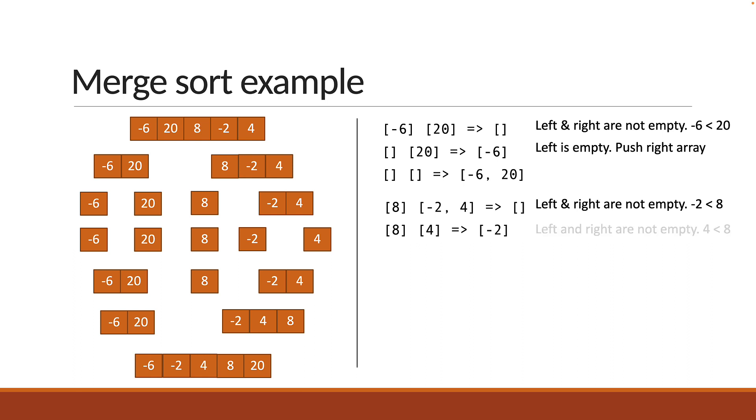Left and right arrays are still not empty. So we compare the first element in each array one more time. 4 is less than 8. So push 4 onto the temp array. Now the right array is empty. We simply push the left array onto the temp array. Both arrays are empty and we now have the sorted sub-array.